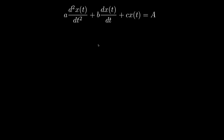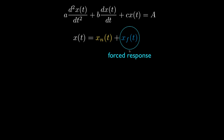Here's a second-order differential equation with a constant driving function a, and the coefficients of the equation are the lowercase variables a, b, and c, which multiply the second derivative of the function we're trying to find, the first derivative of the function, and the function itself. The general solution for the unknown function x is made up of two components. One component is called the forced response, and it represents that part of the solution caused by the constant driving function a.